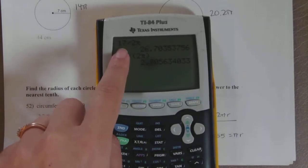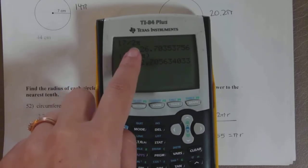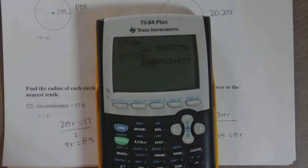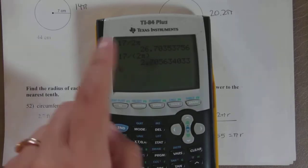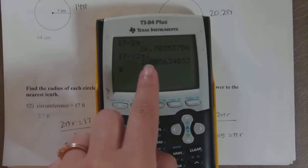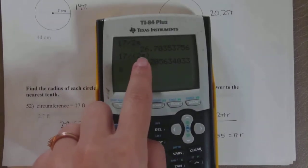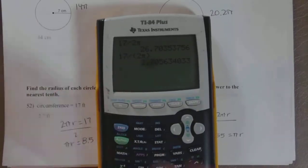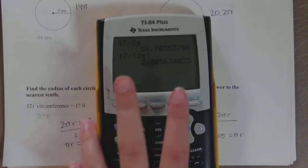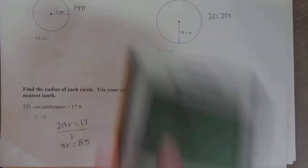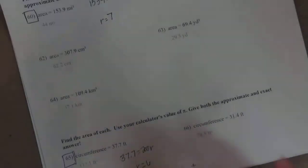Your calculator in the first case is doing 17 divided by 2, which is 8.5, and then multiplying that by π. You have to tell the calculator: No, I want you to multiply 2π first, and then I'm dividing 17 by that value. So just watch your calculator skills.